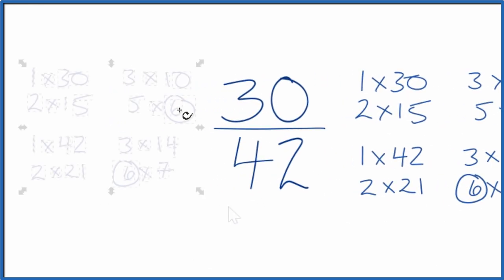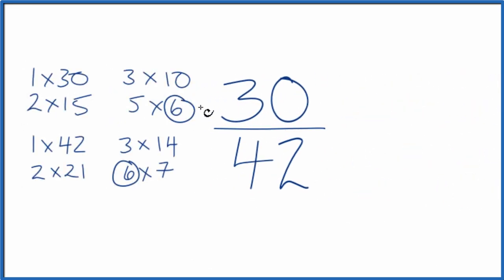Let's move these over here. We divide 30 by 6, we get 5. And then we divide 42 by 6, we get 7. So we've simplified the fraction 30 over 42 down to 5 sevenths.